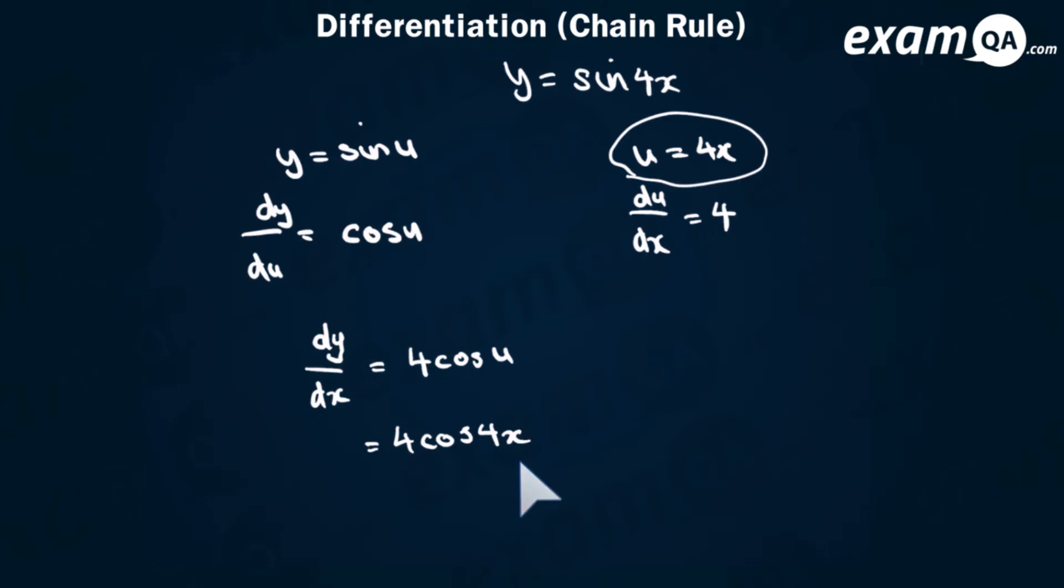Now a lot of you could do that differentiation without actually using the chain rule and showing it like this. You need not to show all of this working out. You can go straight to the answer. The only time you're going to show all your working out is if the question says show using the chain rule. Then you want to show this whole process. Otherwise you can go from y equals sine 4x straight to dy/dx equals 4 cos 4x.